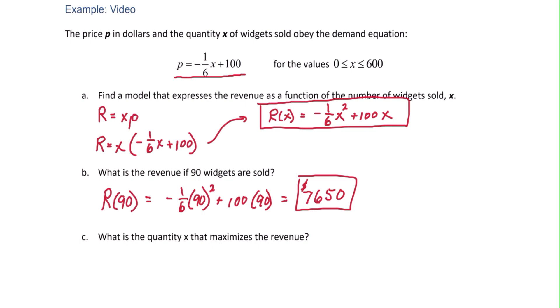Part c, what is the quantity that maximizes revenue? Notice that the revenue function from part a is a quadratic and it's opening down. So that means we have a maximum somewhere. We're looking for where that max occurs. That's the vertex of the parabola.